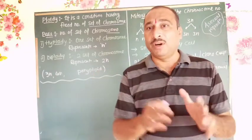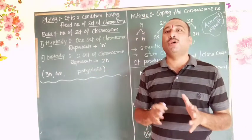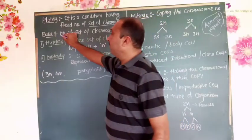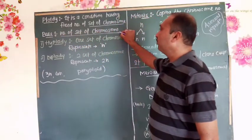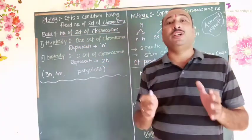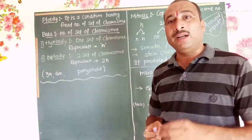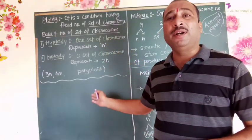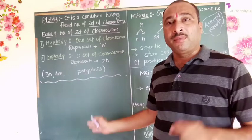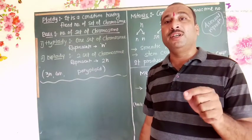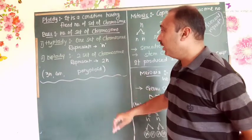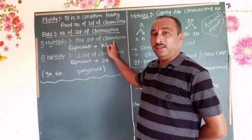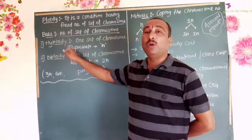The condition of humans is the condition of having a fixed number of chromosomes. On the basis of the number of sets of chromosomes, there are many different types of ploidy. If only one set of chromosomes is present, then it is called haploidy.